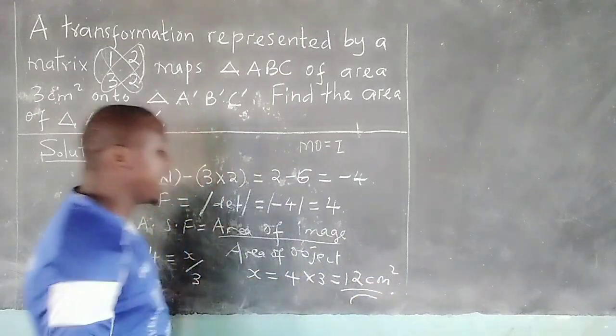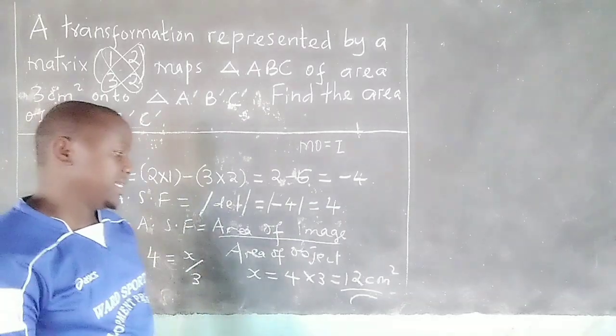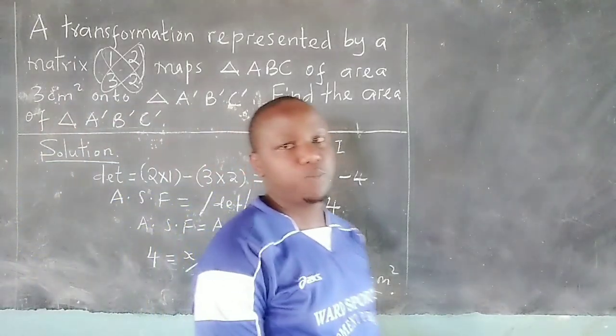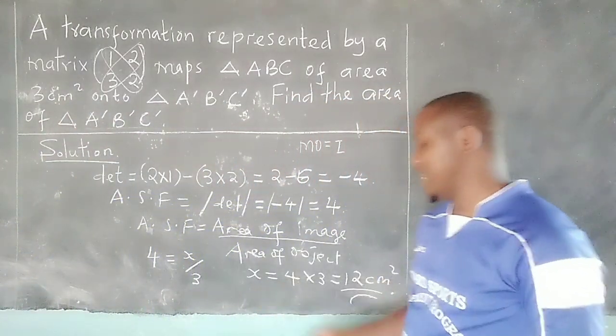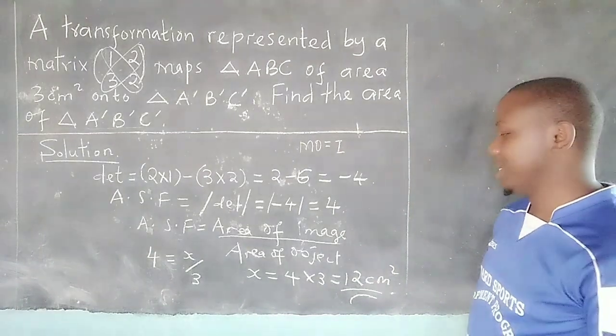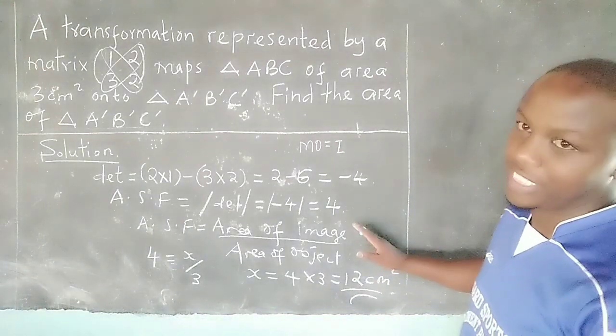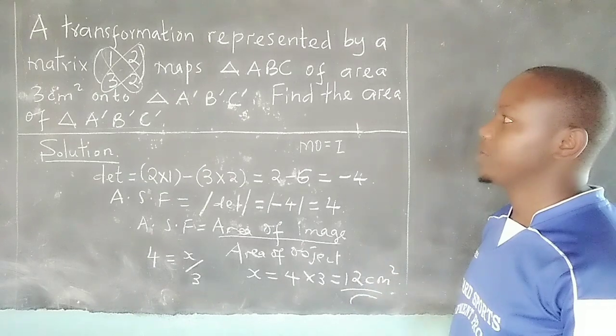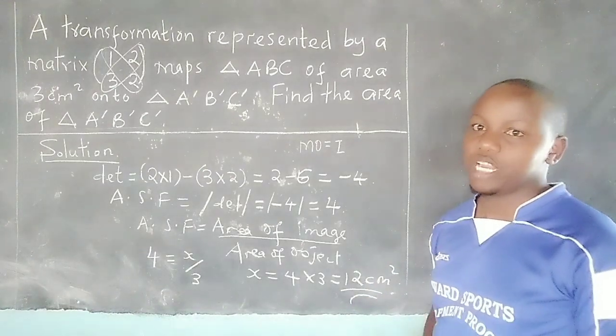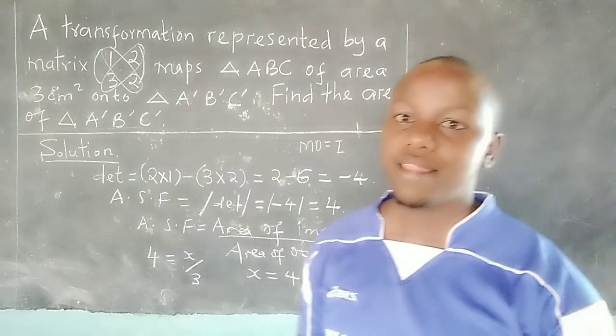Therefore, the area in this case will be 12 centimeters square, because we have multiplied object area with area scale factor to get area of the image. So that is how we go about such a question. Thank you for following, kindly subscribe to Shifting Graves and share the link.